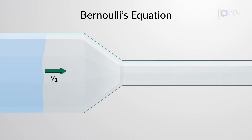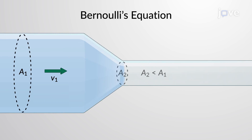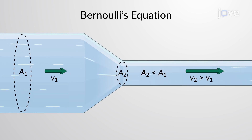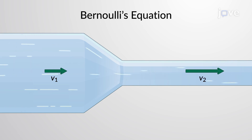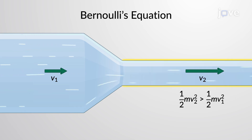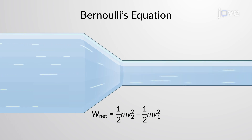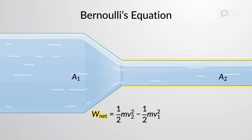Imagine an incompressible fluid passing through a tube. If the tube's cross-sectional area narrows in a particular region, the fluid's flow speeds up. This suggests that the kinetic energy of the fluid in this region is more. Since the principle of conservation of energy holds true, it implies that net work is done on this part of the fluid.